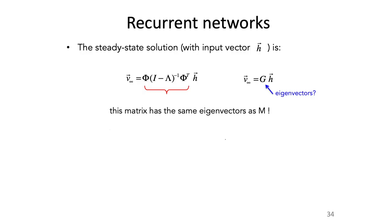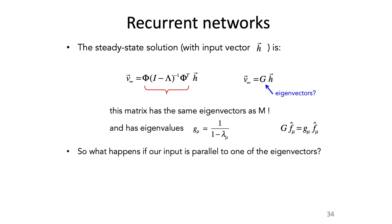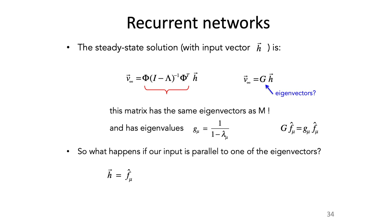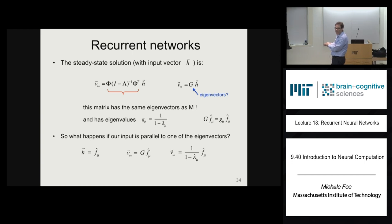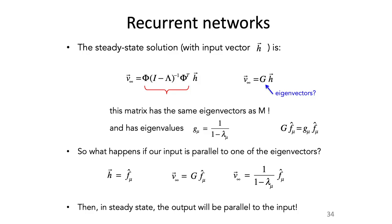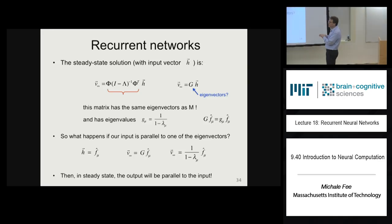This gain matrix has exactly the same eigenvectors as M, and the eigenvalues are just 1 over (1 minus lambda). This means if an input is parallel to one of the eigenvectors of the weight matrix, the output is parallel to the input. If the input is in the direction of an eigenvector, v_infinity is parallel to that eigenvector with a scaling factor of 1 over (1 minus lambda). So in steady state, the output will be parallel to the input if the input is in the direction of one of the eigenvectors of the network.